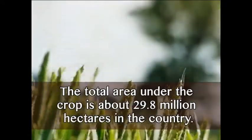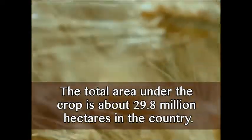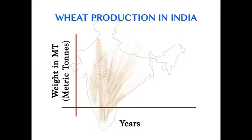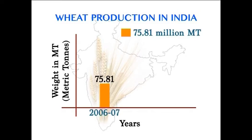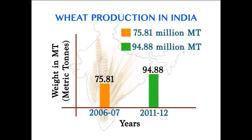Wheat is the main cereal crop in India. The total area under the crop is about 29.8 million hectares. The production of wheat has increased significantly from 75.81 million metric tons in 2006-07 to a record high of 94.88 million metric tons in 2011-12. The productivity rose from 2,602 kg per hectare in 2004-05 to 3,140 kg per hectare in 2011-12. Major increases in productivity have been observed in UP, Haryana, and Punjab. Higher area coverage is also reported from MP in recent years.